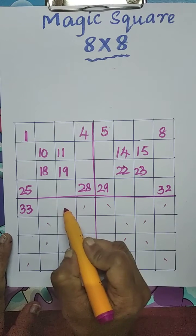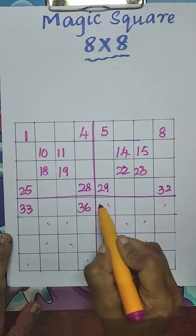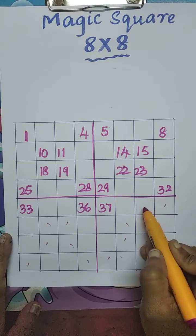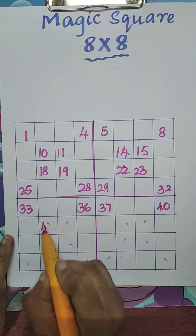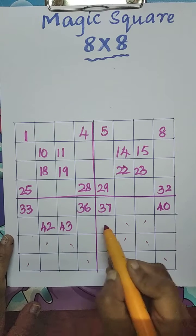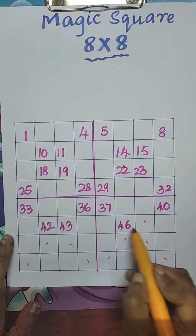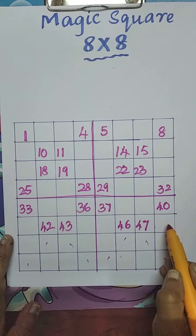Again continue this line. After 32, 33, 34, 35, 36, 37, 38, 39, 40, 41, 42, 43, 44, 45, 46, 47, 48.